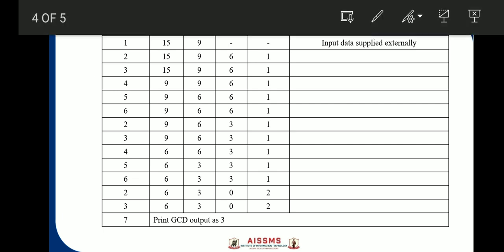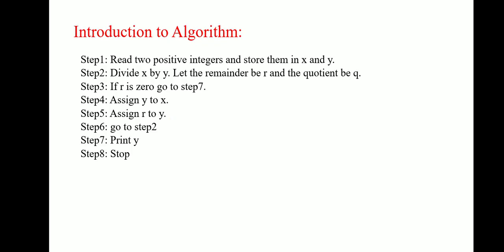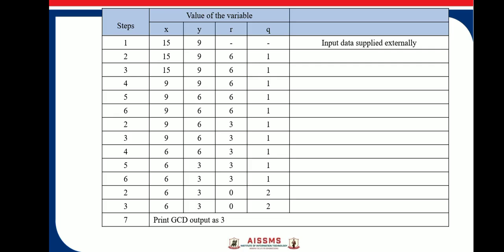What is the step 2? Step 2 is divide X by Y and keep R as a remainder and quotient be Q. Here, X is equal to 15, Y is equal to 9.